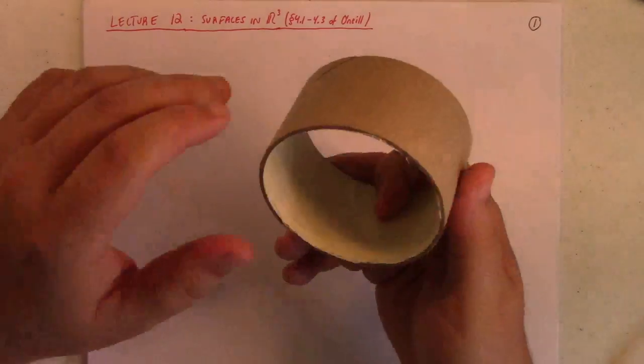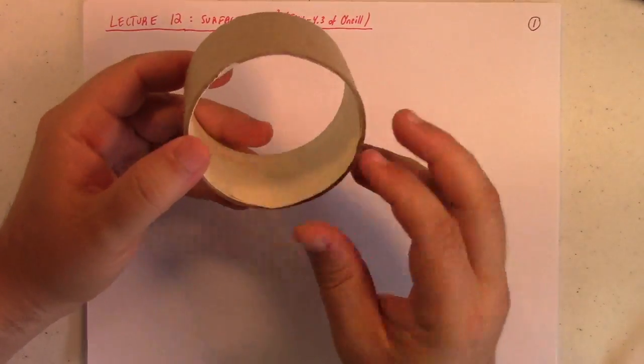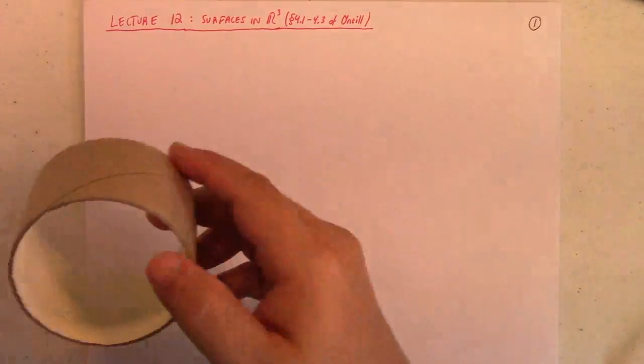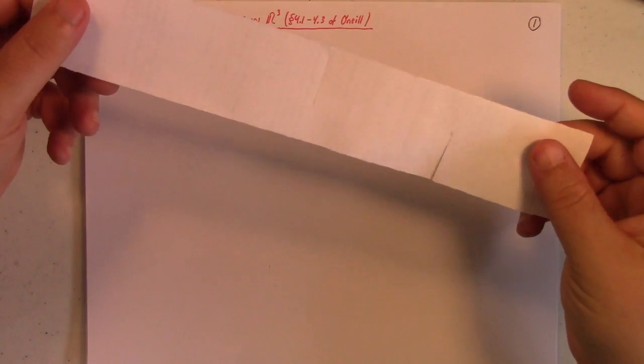Now, another example of a surface would be something like this. Ignore the thickness. Like a cylinder is a good example of a surface in R3. Another example of a surface would be something like just a strip.